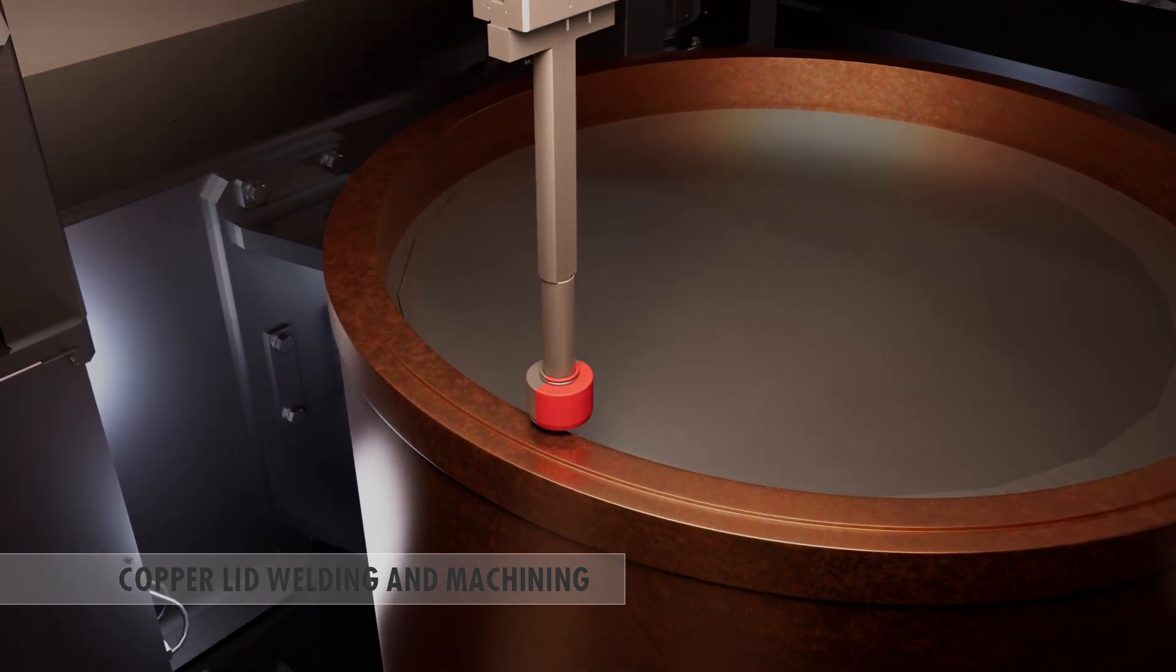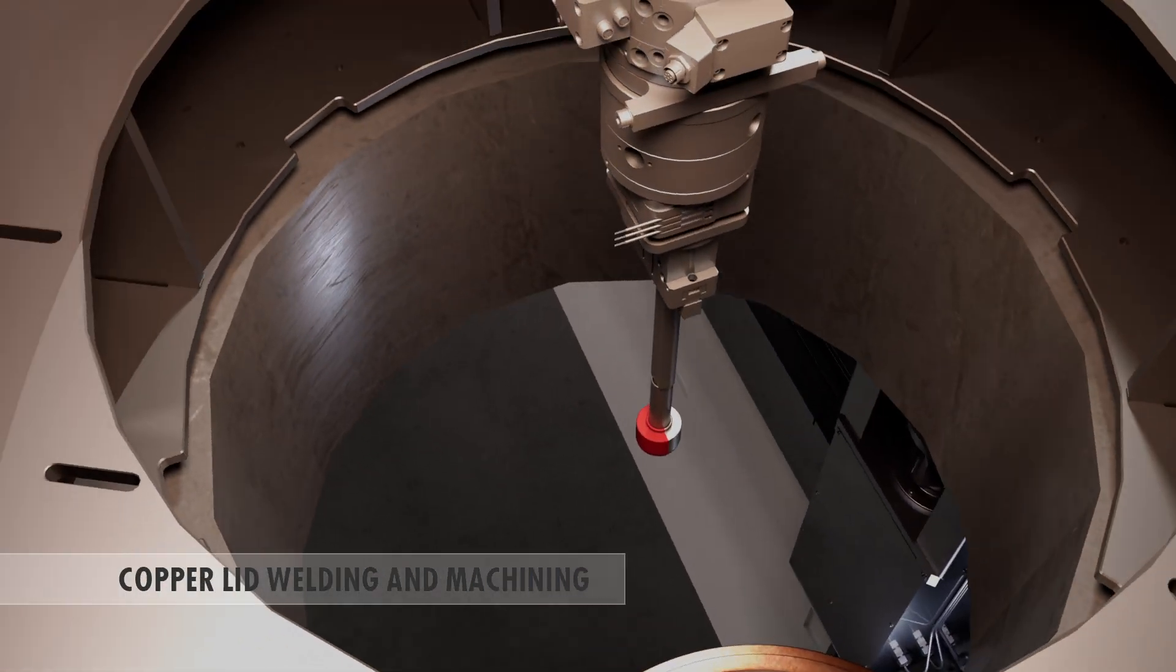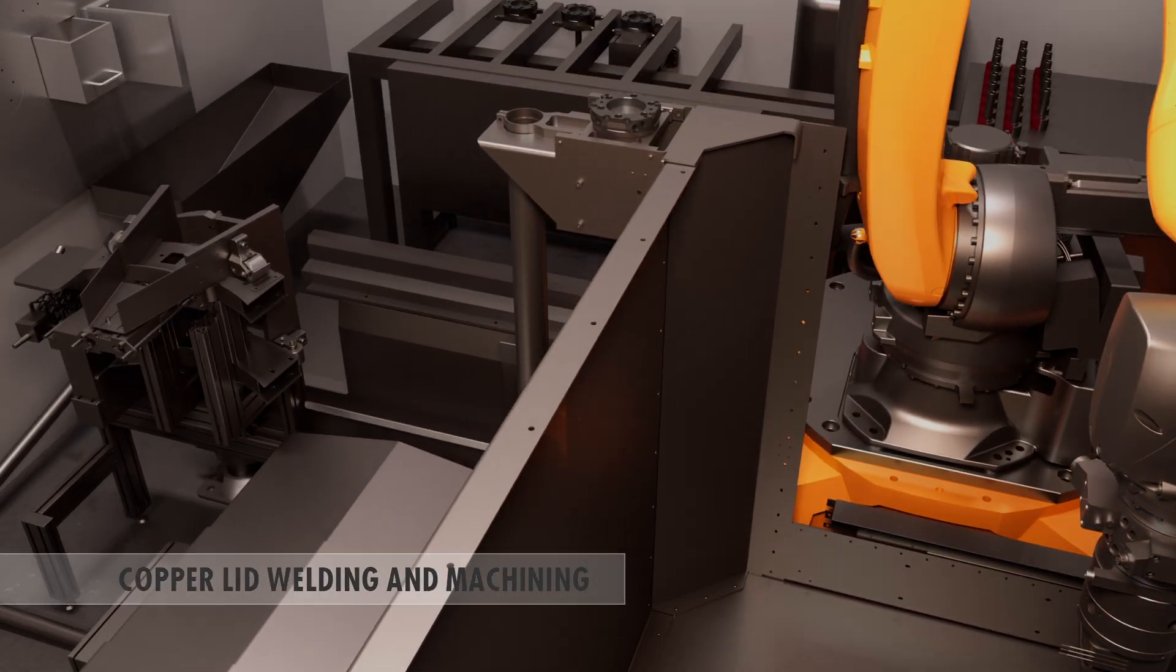The canister can then be transferred to the welding station, where the copper lid is fitted and welded using a friction stir welding machine.